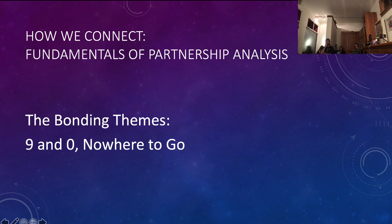I only have three centers defined in my own chart, so it's relatively rare for me to have all nine with someone. But Mike, you have seven defined. There are people who actually have all nine defined — therefore every person they're in a relationship with has this bonding theme. There are also people who have no centers defined — reflectors — yet when they come together with another reflector, they can make all nine defined, because what causes definition is activation of two gates in the same channel, the harmonic gates.